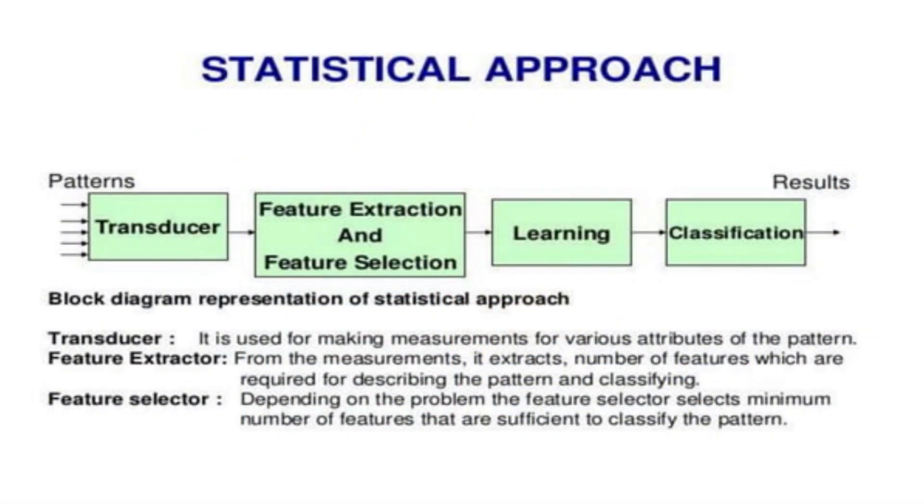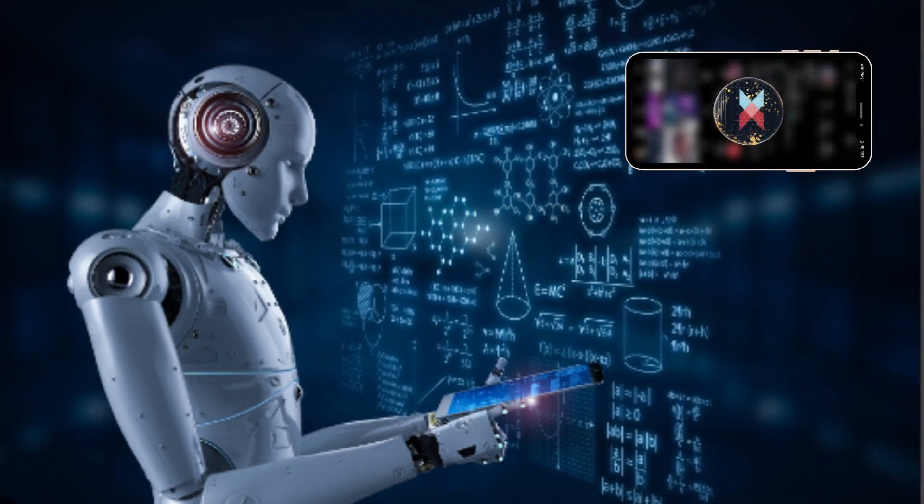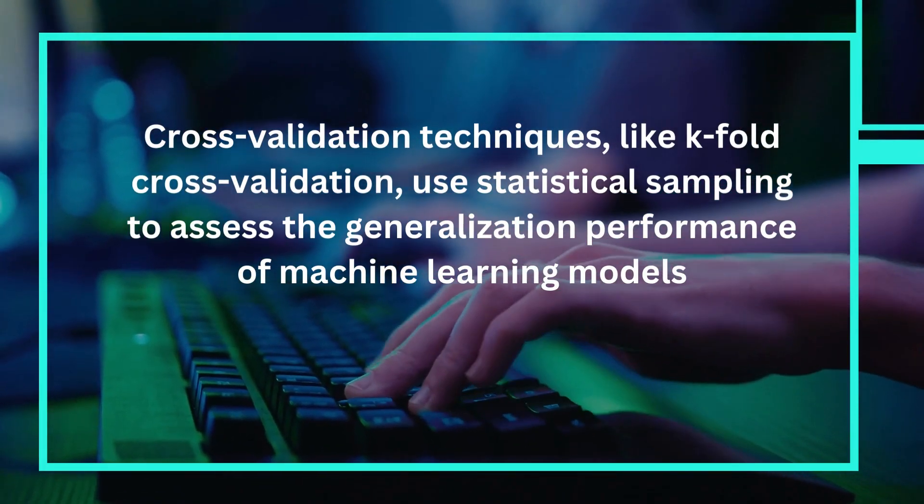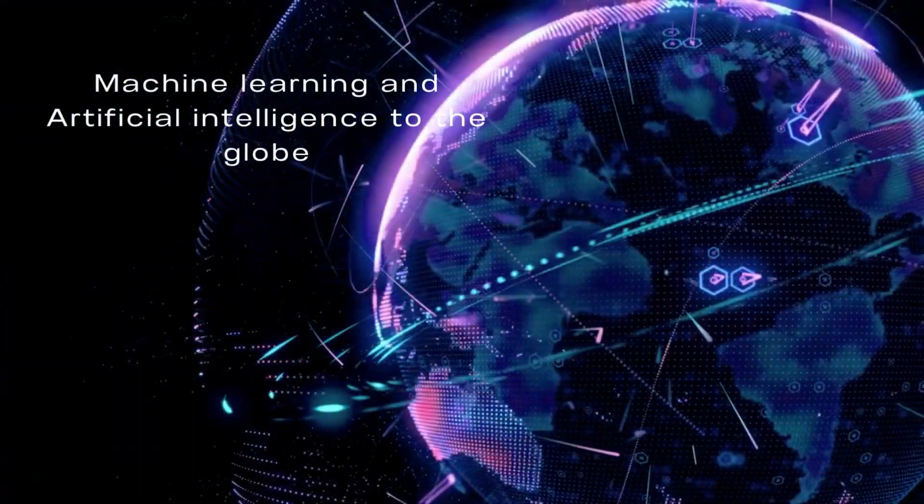Let's get started by discussing the statistical approach. These approaches use statistical techniques to analyze data, make predictions, and classify objects based on observed patterns. Cross-validation techniques, like K-fold cross-validation, use statistical sampling to assess the generalization performance of machine learning models.